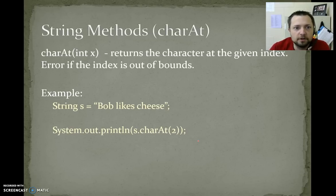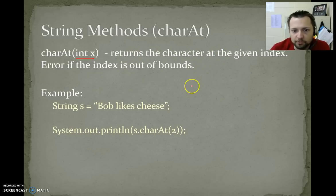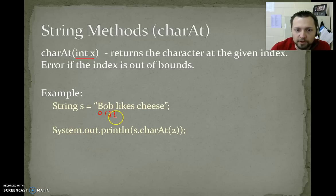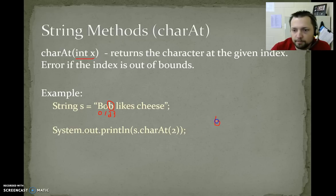charAt — receives int x and returns the character at the given index. Error if the index is out of bounds. So here we do charAt(2). String s equals "Bob Likes Cheese". We start numbering: 0 is B, 1 is o, 2 is b. At location 2, we have a b. So here this is going to print b.